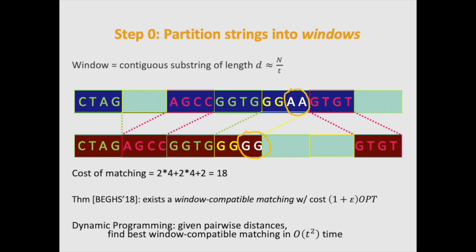In particular, if t is about square root of n, then we could have a near linear time algorithm if we can efficiently compute the distances between windows.